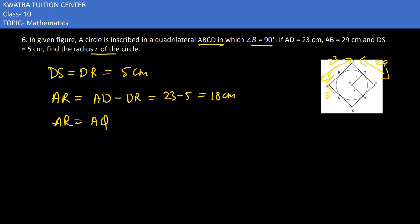Now if AR is 18 cm, then AQ is also 18 cm, because these are tangents drawn from one external point. To find QB, we take AB which is 29 cm, subtract AQ which is 18 cm, and we get 11 cm.